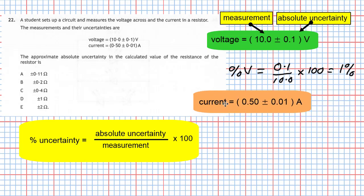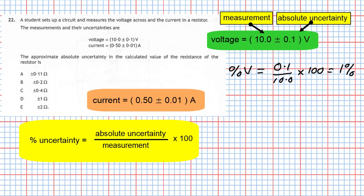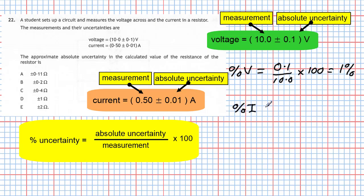Here's the current. The measurement for the current is 0.50 and the absolute uncertainty is 0.01. So the percentage uncertainty in the current equals the absolute uncertainty, which is 0.01, divided by the measurement, which is 0.50, multiplied by 100.